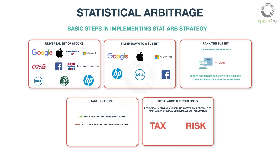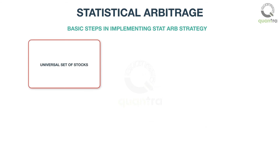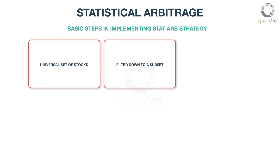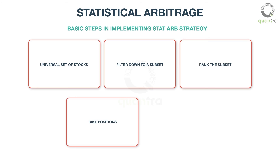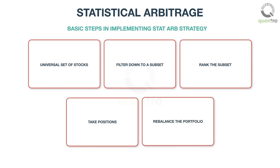To recap, the primary steps involved in a Stat-Arb strategy are: First, start with a universal set of stocks. Second, filter down to a subset. Third, rank the stocks within the subset. Fourth, take positions by going long on higher ranked and shorting the lower ranked stocks. Fifth, rebalance the portfolio as required.